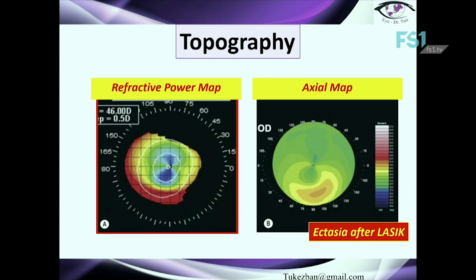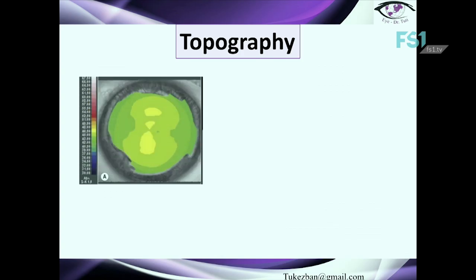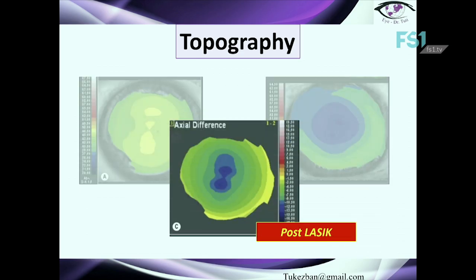This is a patient with ectasia after LASIK. Next, let's discuss the difference map. Here, a preoperative image shows a patient with astigmatism — it appears to be oblique or with-the-rule corneal cylinder. The postoperative LASIK map of the same patient is also shown. The device calculates the difference clearly between pre- and post-operative states, showing the characteristic of the toric ablation. The difference map essentially shows the difference in curvature between measurements.